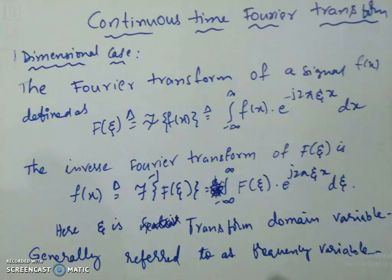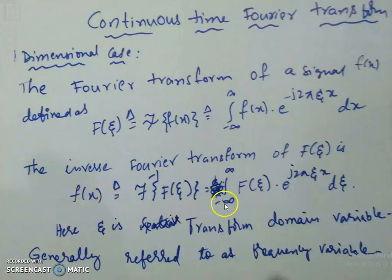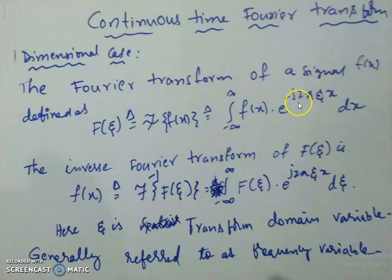The continuous-time Fourier transform is one such transform we need here. Let us consider the one-dimensional case first. The Fourier transform of a signal f(x) is defined as F(ζ) equal to the integral from minus infinite to infinite of f(x) times e to the power of minus j 2π ζ x dx. The inverse Fourier transform is f(x) equal to the integral from minus infinite to infinite of F(ζ) times e to the power of j 2π ζ x dζ. Here ζ is a frequency variable — not a radial frequency, just a frequency variable.